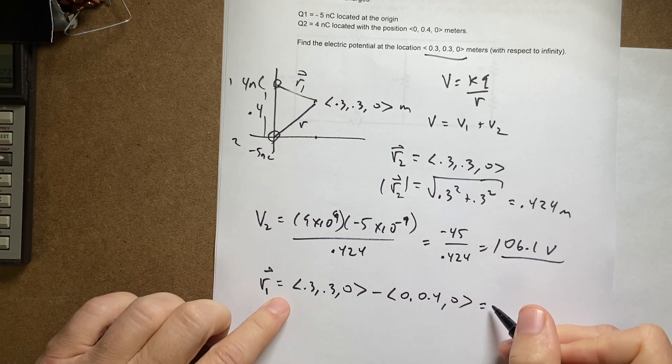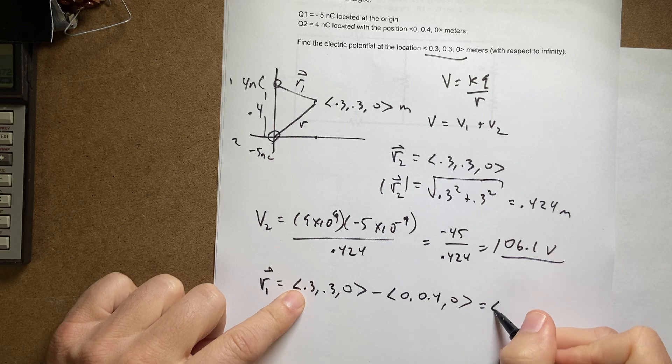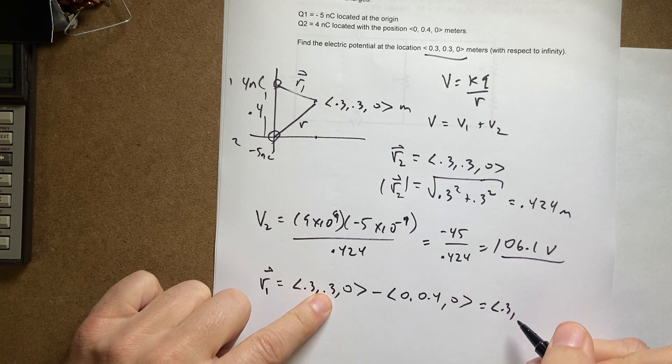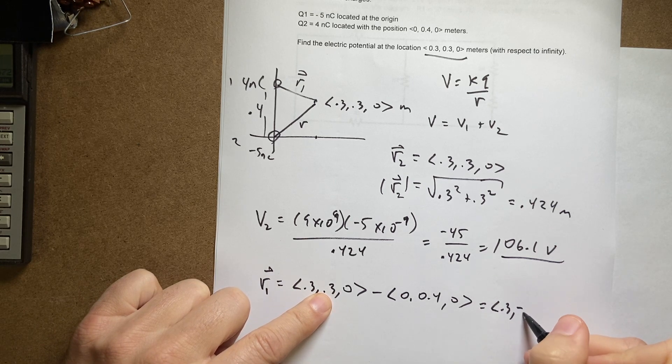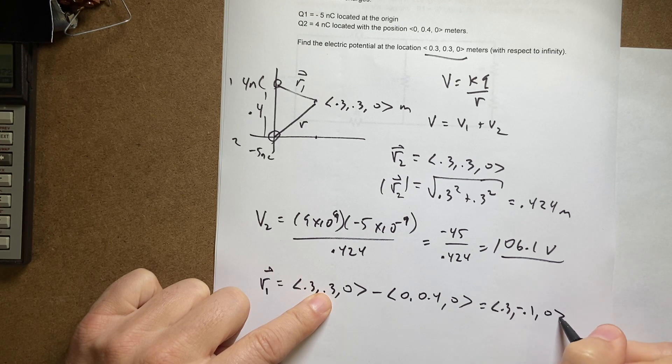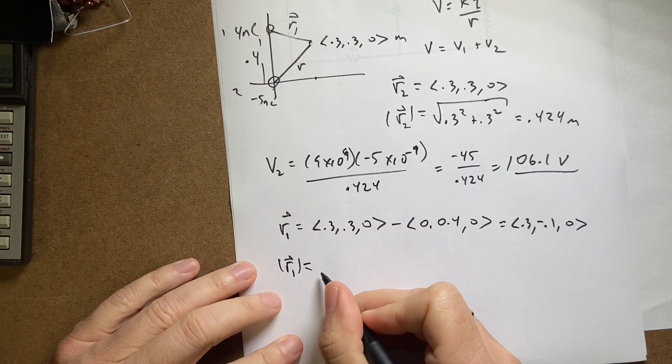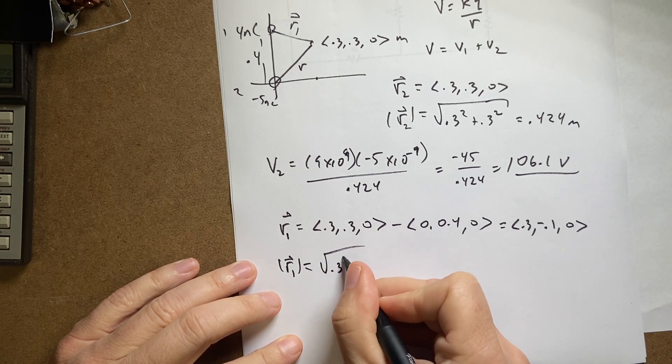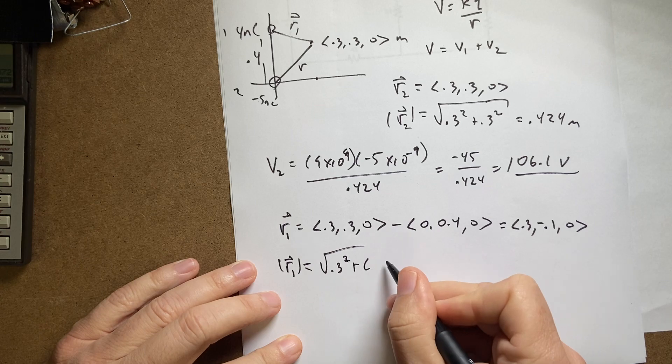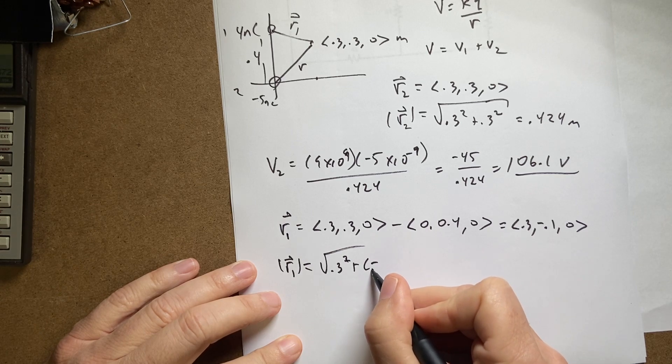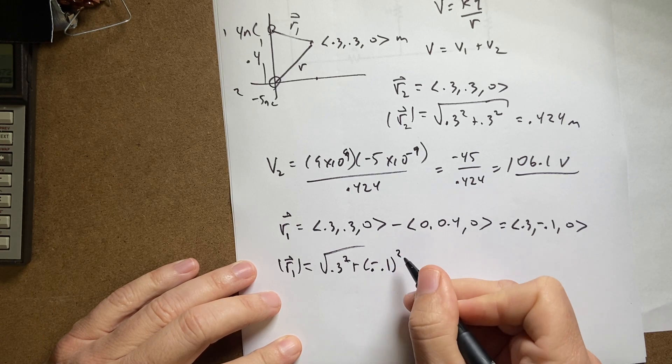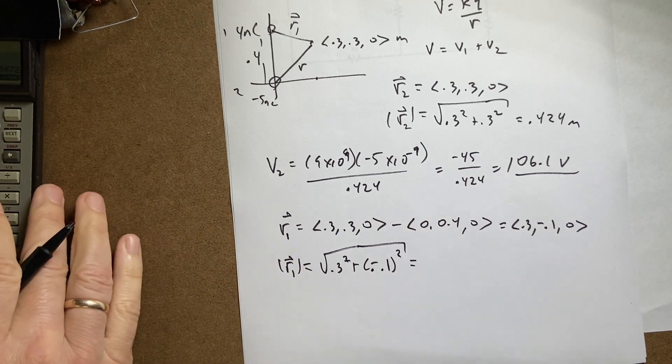I get 0.3 minus 0.4 which is negative 0.1, 0. Now I need to find the magnitude of that vector. The magnitude of R1 is going to be the square root of 0.3 squared plus negative 0.1 squared just to be clear, plus 0 squared. So let's put that in there.